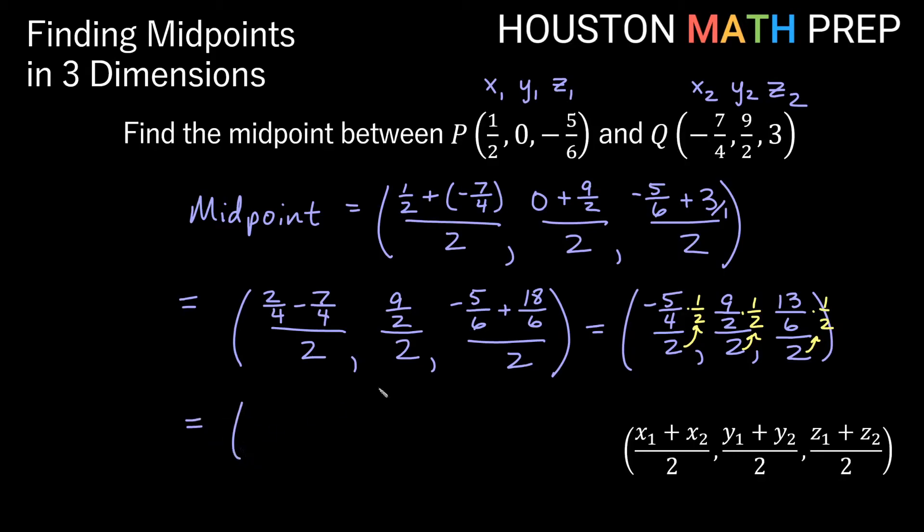So in this case, then we'll get a midpoint of negative 5 over 8 for the x coordinate. Our y coordinate will be positive 9 over 4, and our z coordinate then will be 13 over 12. There's our midpoint between this version of P and Q here.